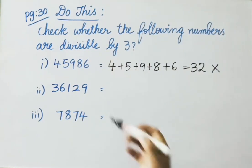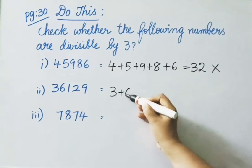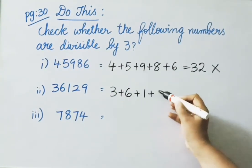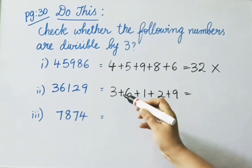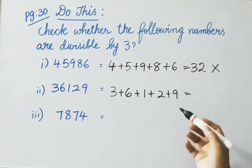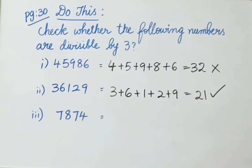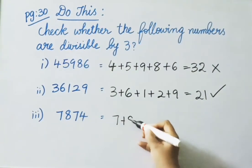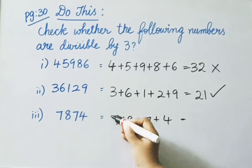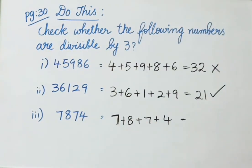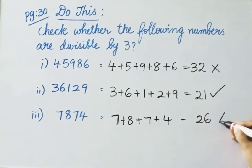The second number is 6,129. Sum of digits: 6 plus 1 plus 2 plus 9 equals 18. Wait — adding them step by step: 3 plus 6 is 9, 9 plus 1 is 10, 10 plus 2 is 12, 12 plus 9 is 21. Since 21 is a multiple of 3, it is divisible by 3. The third number is 7,874: 7 plus 8 plus 7 plus 4 equals 26. Since 26 is not a multiple of 3, it is not divisible by 3.